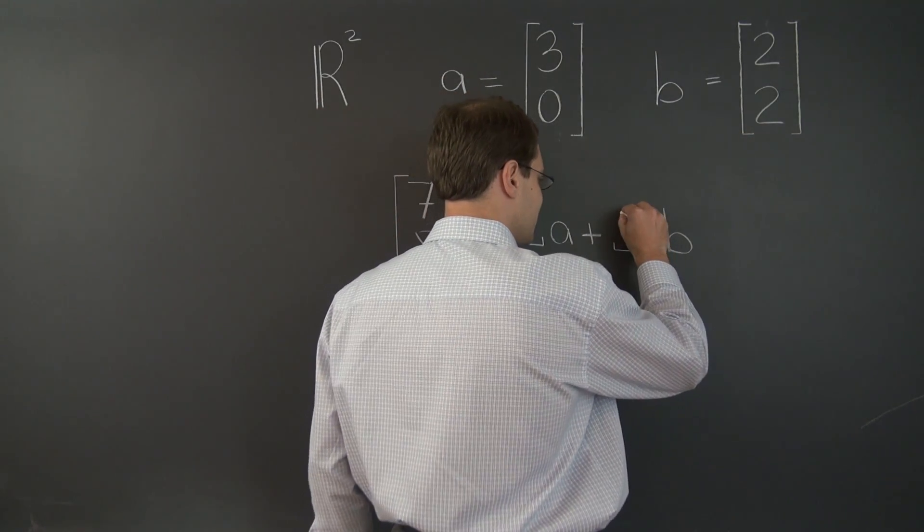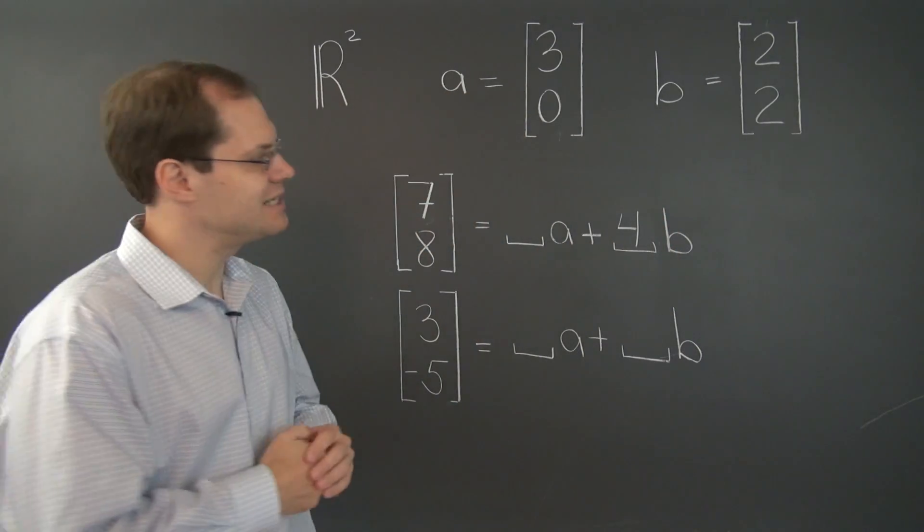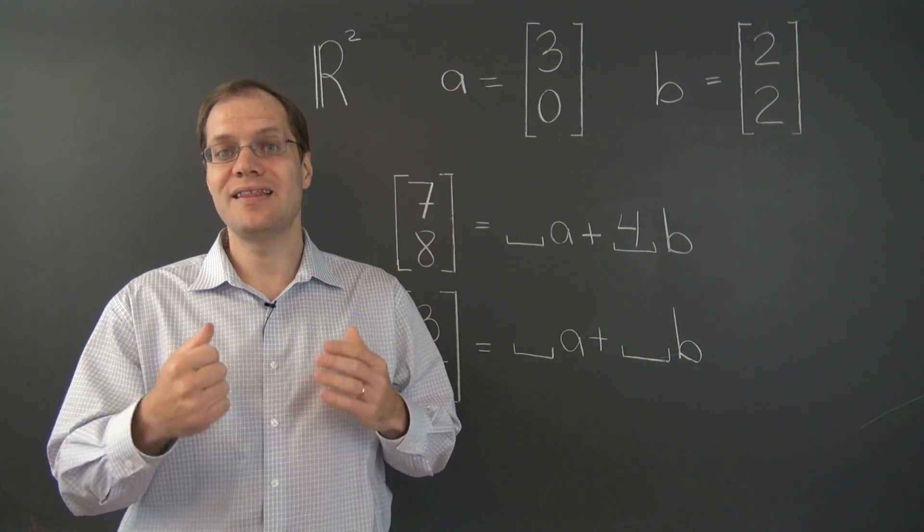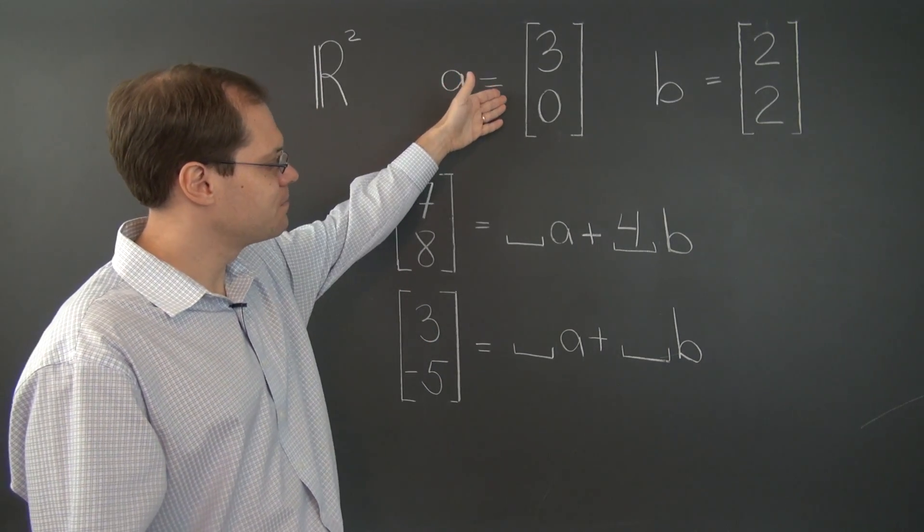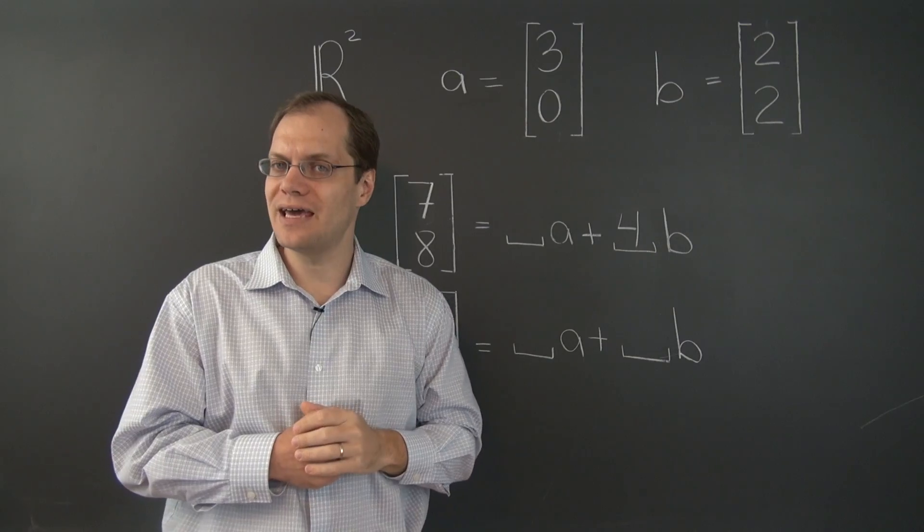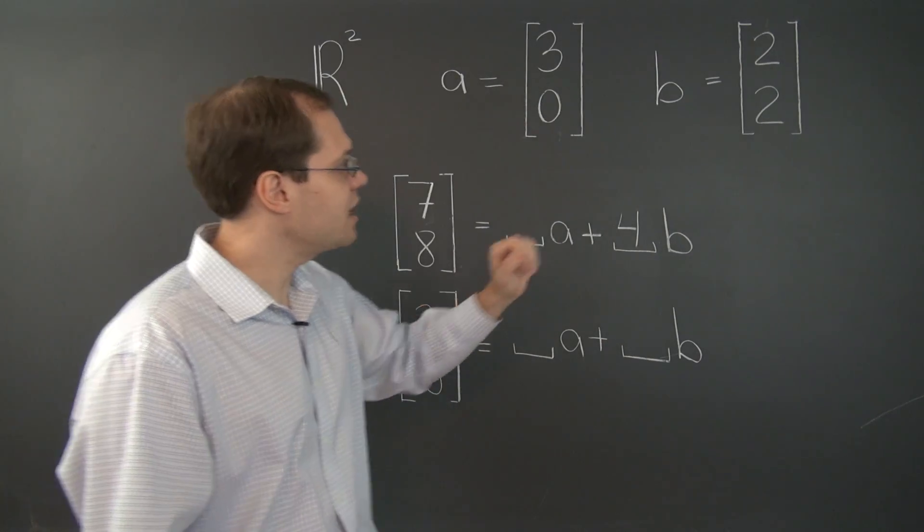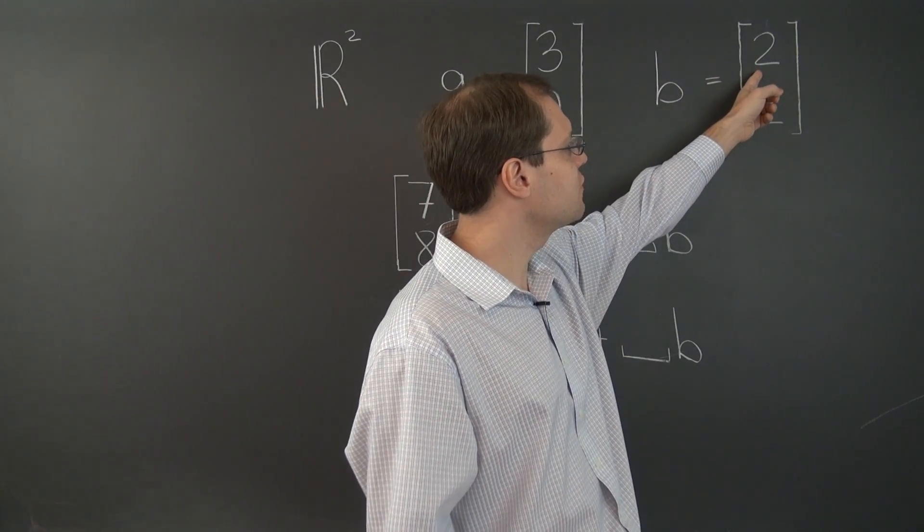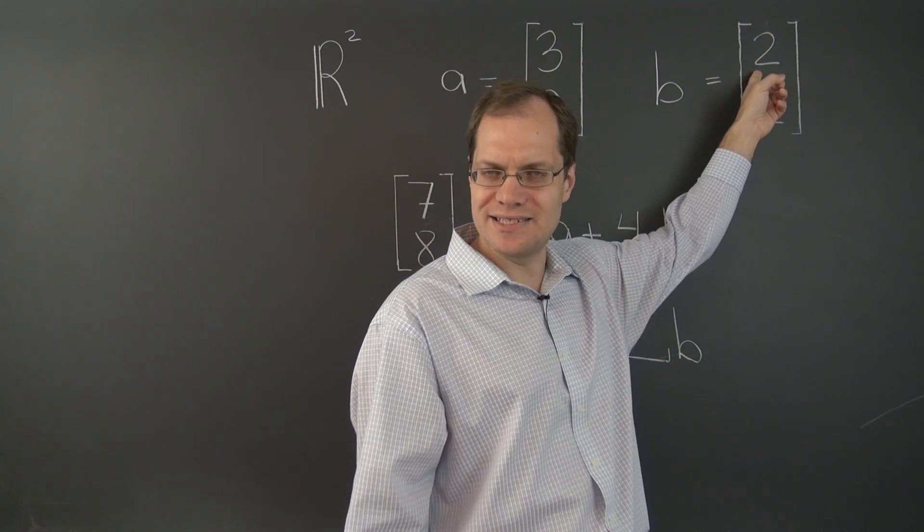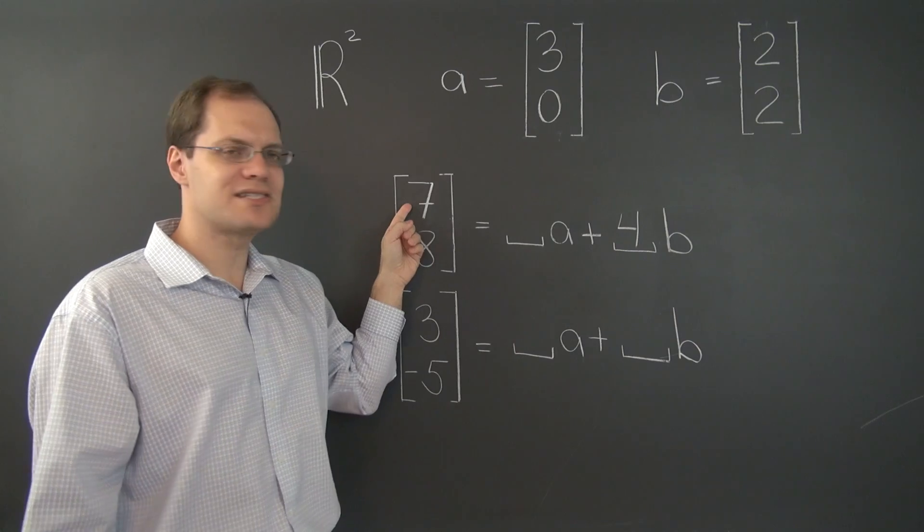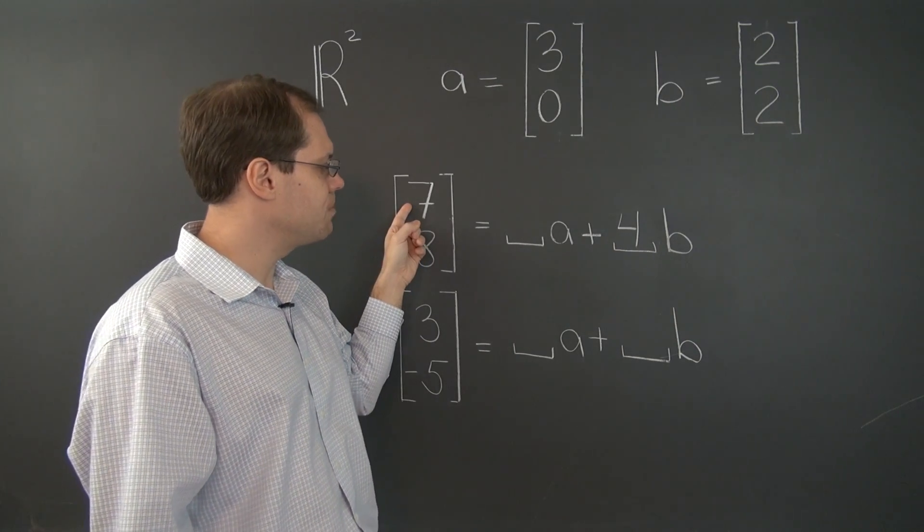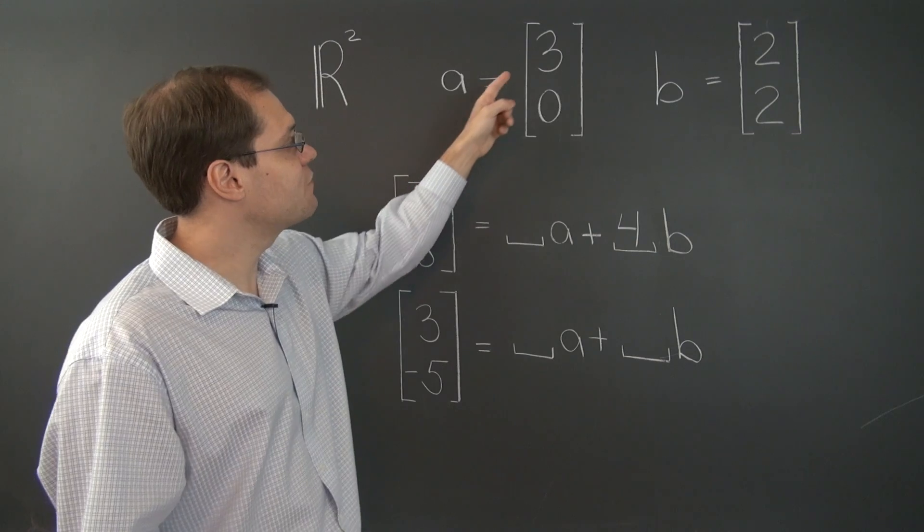So the number didn't change. Now, we have to get the first entry right with the help of A. So let's see how much of A we need to take. The contribution from B to the first entry was 8. So we need to go from 8 to 7. So we need to reduce the first entry by 1.